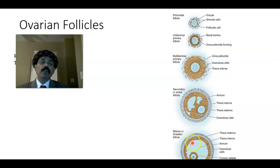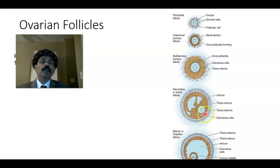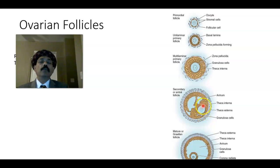Then we get the mature follicle. This is the antrum — one big cavity. These cells are called corona radiata cells. These follicle cells are called the cumulus oophorus. The cell surrounding the oocyte which will be discharged along with the oocyte at ovulation are called corona radiata. So we get the cumulus oophorus here, and the cells surrounding it that will be discharged along with the oocyte at ovulation are called corona radiata.